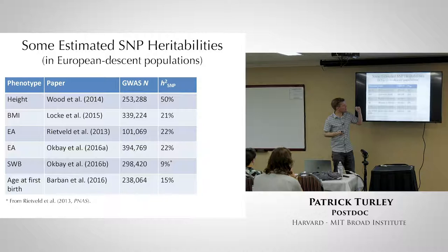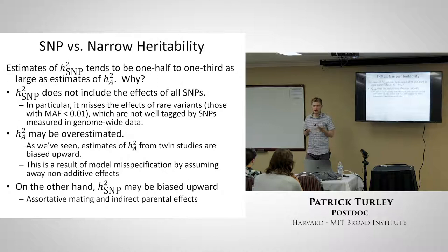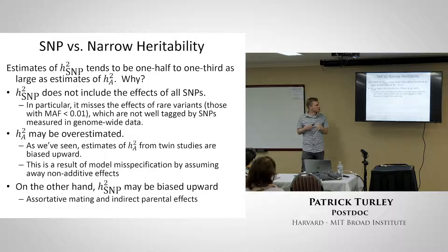As examples of SNP heritability values: for height it's around 50%, BMI and educational attainment are around 20%, subjective well-being is 9%, and age at first birth is 15%. These numbers are often half to a third as large as narrow-sense heritability estimates.